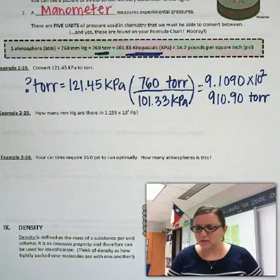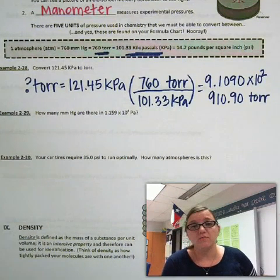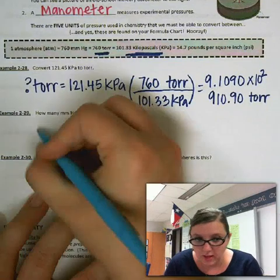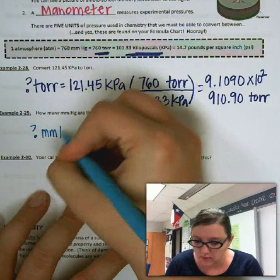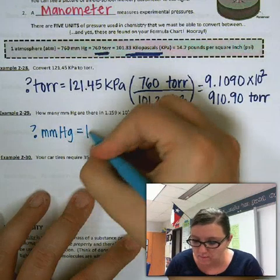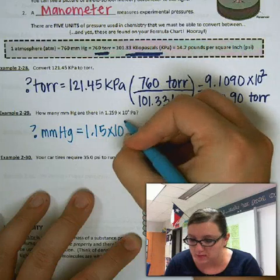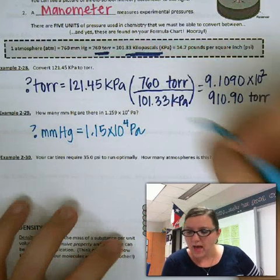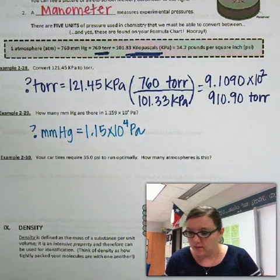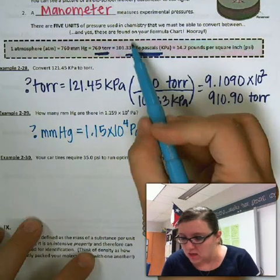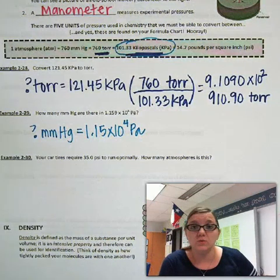Now let's do one more together. The next one says: how many millimeters of mercury are there in 1.159 × 10⁴ pascals? You notice that pascals is not on our conversion chart — we have kilopascals, but we don't have pascals.